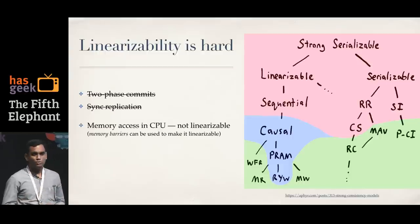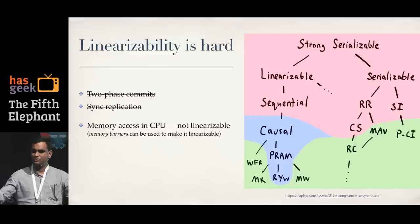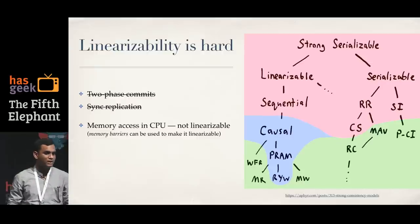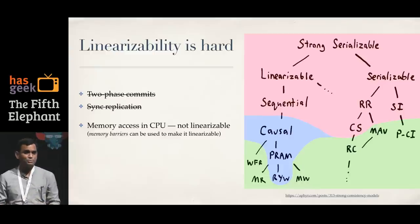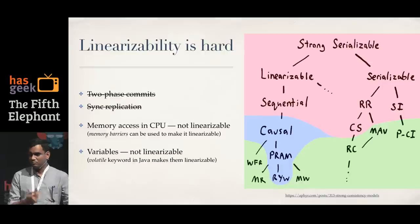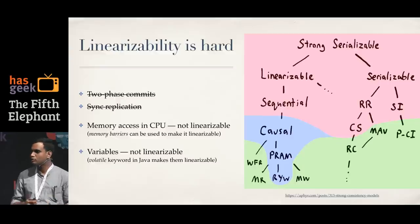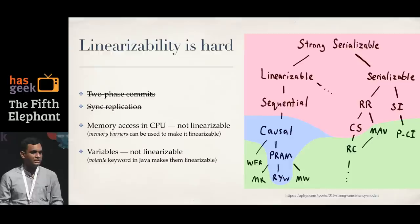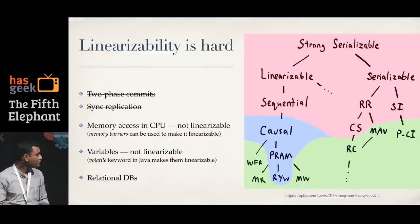Things like two-phase commits and synchronous replication are often cited for achieving linearizable consistency, but even those rarely accomplish it — they're good for sequential consistency but not linearizable consistency. Even memory access in multi-core CPUs is not linearizable, because each core has its own L1 cache. There is a special memory barrier instruction in many processors that can make memory access linearizable. In Java, the volatile keyword inserts memory barrier instructions when you write to that variable.